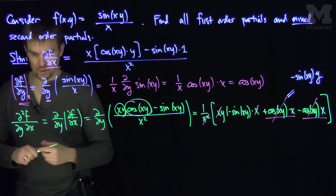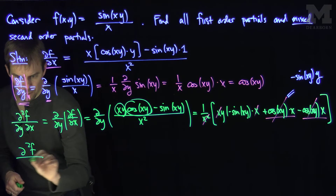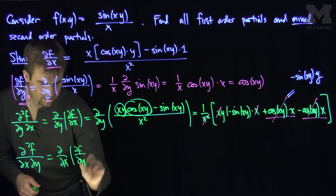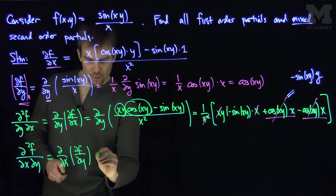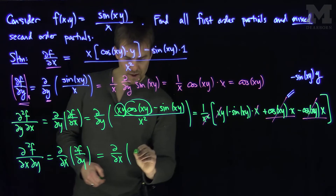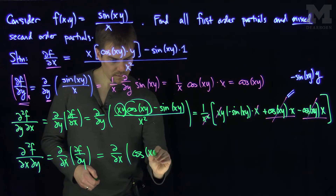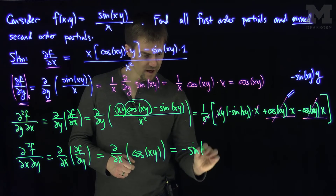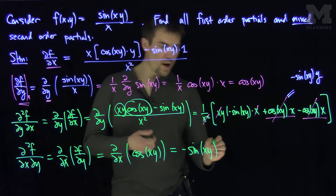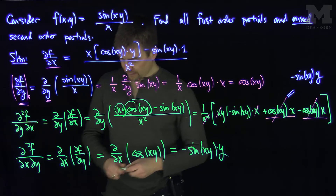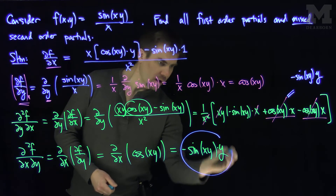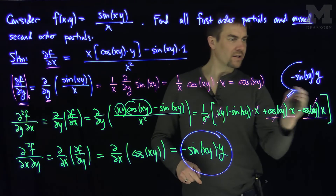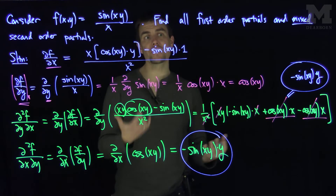Next, let's compute the easier derivative ∂²f/∂y∂x — the x derivative of the y derivative. The y derivative was cosine(xy), so we take the x derivative: the derivative of cosine is negative sine, giving −sin(xy), times the derivative of xy with respect to x, which is y. So ∂²f/∂y∂x = −y·sin(xy). Lo and behold, ∂²f/∂x∂y and ∂²f/∂y∂x are exactly the same function, even for this complex example.